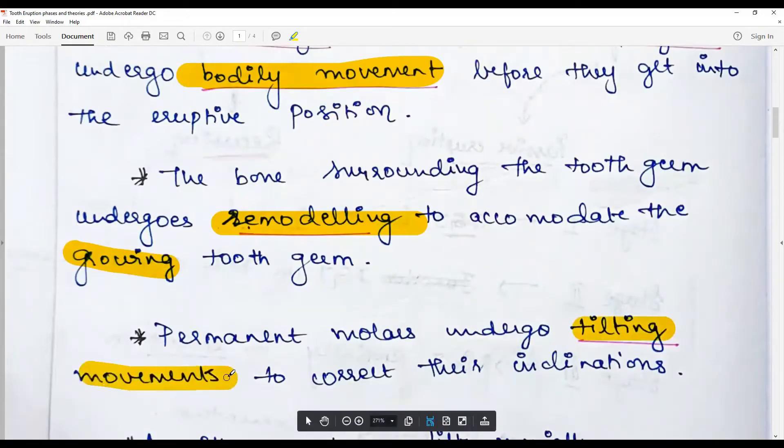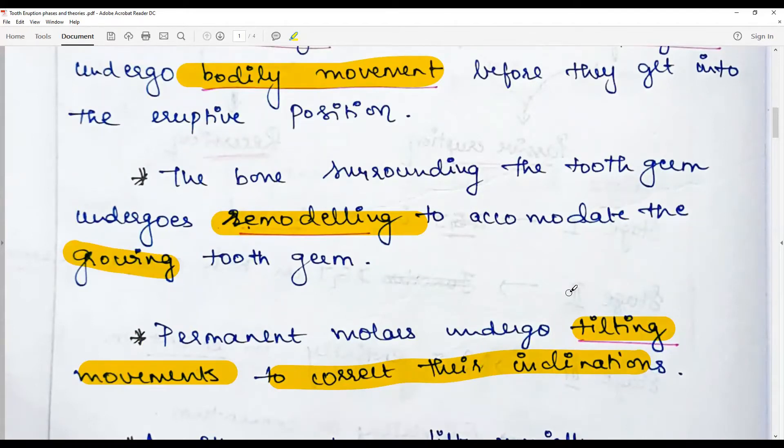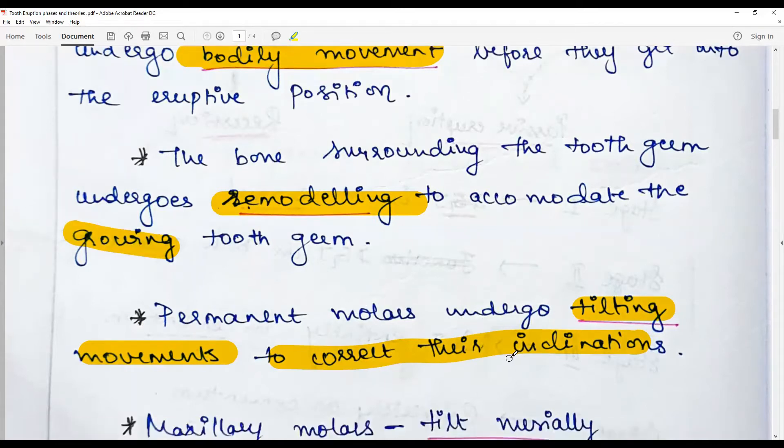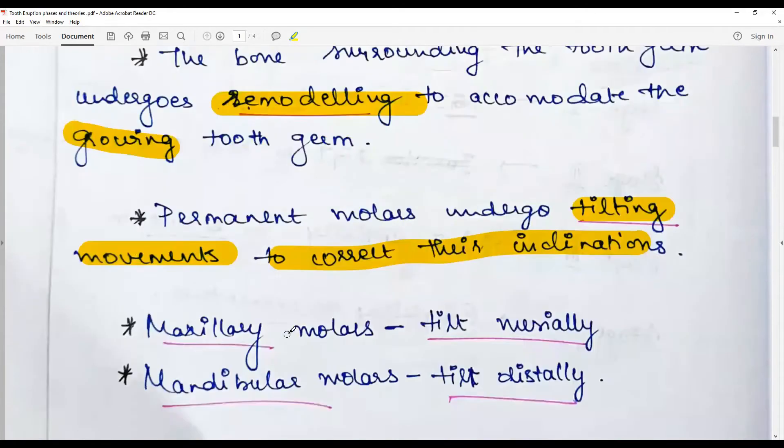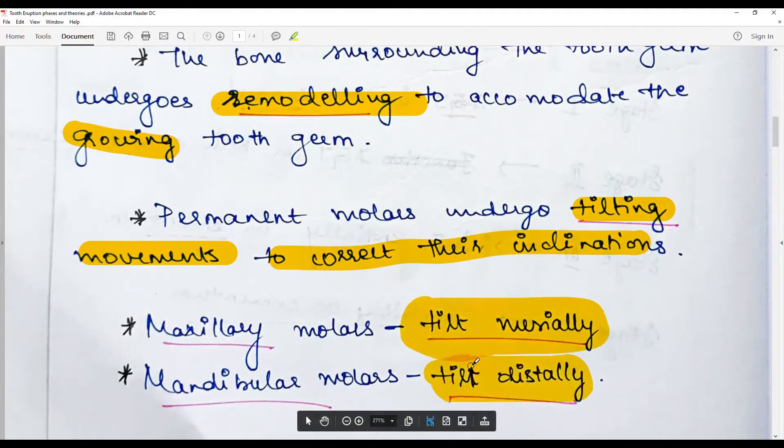The permanent molars undergo tilting movements to correct their inclination such that they fit inside the flaring and resorbing roots of the deciduous teeth. Permanent molars undergo tilting movements to correct their inclination because they don't have any deciduous or predecessor teeth. The maxillary molars tilt mesially to accommodate the developing premolars. Mandibular molars tilt distally, very characteristic.